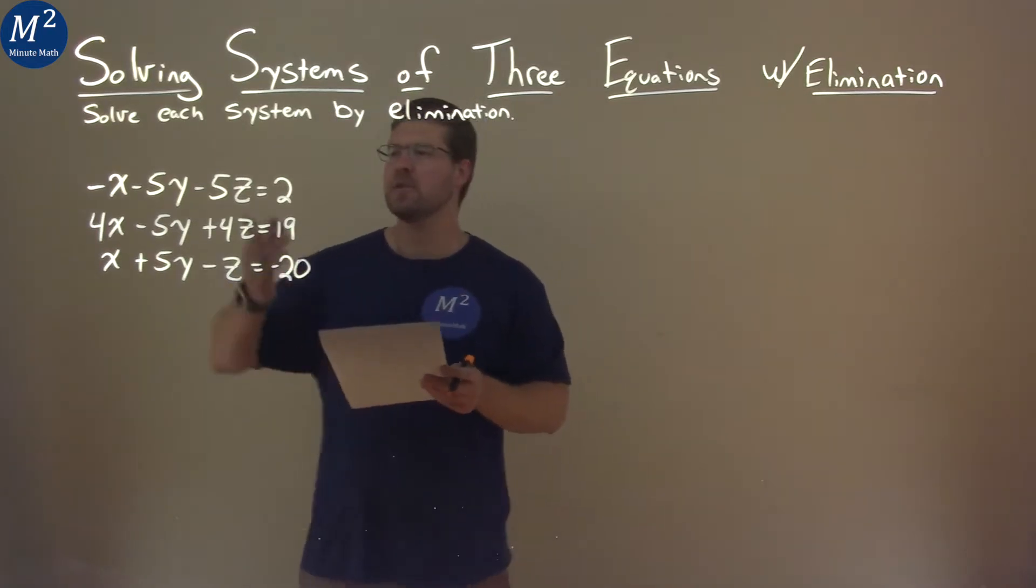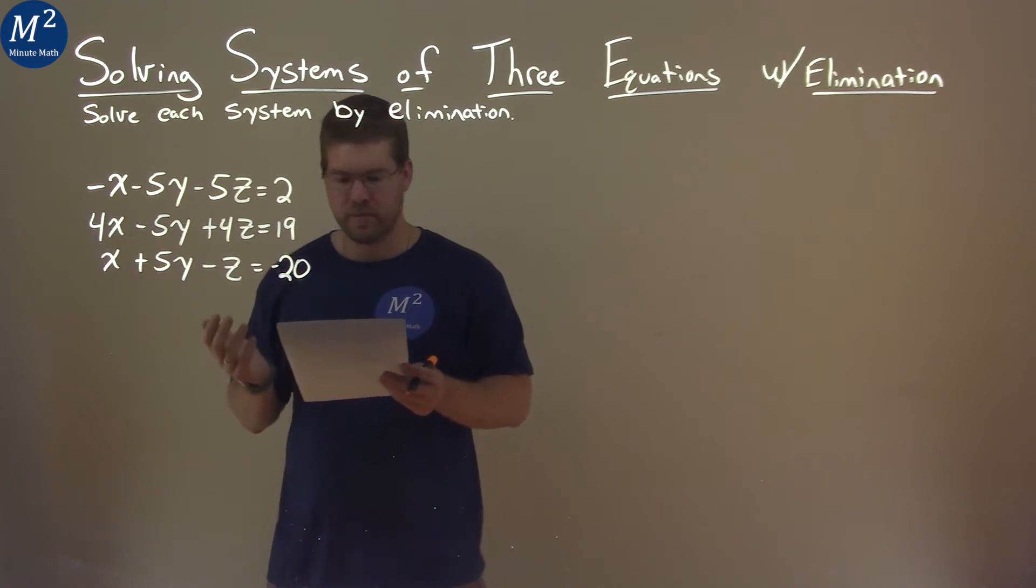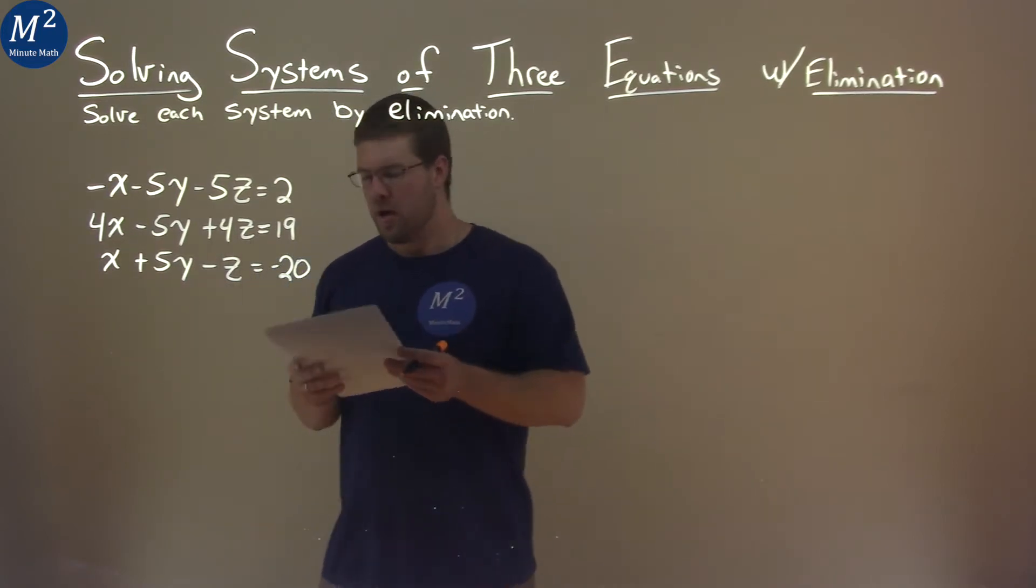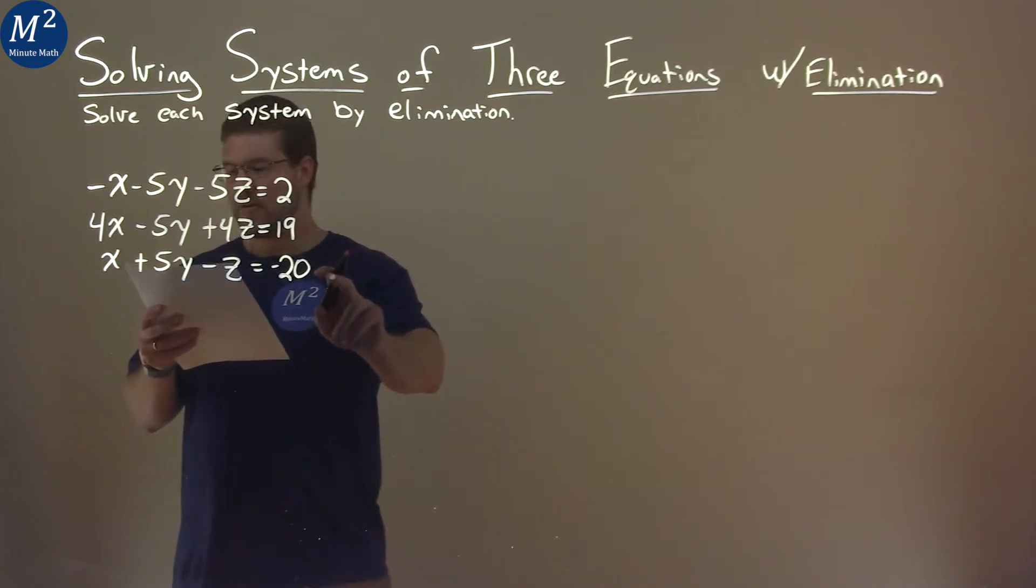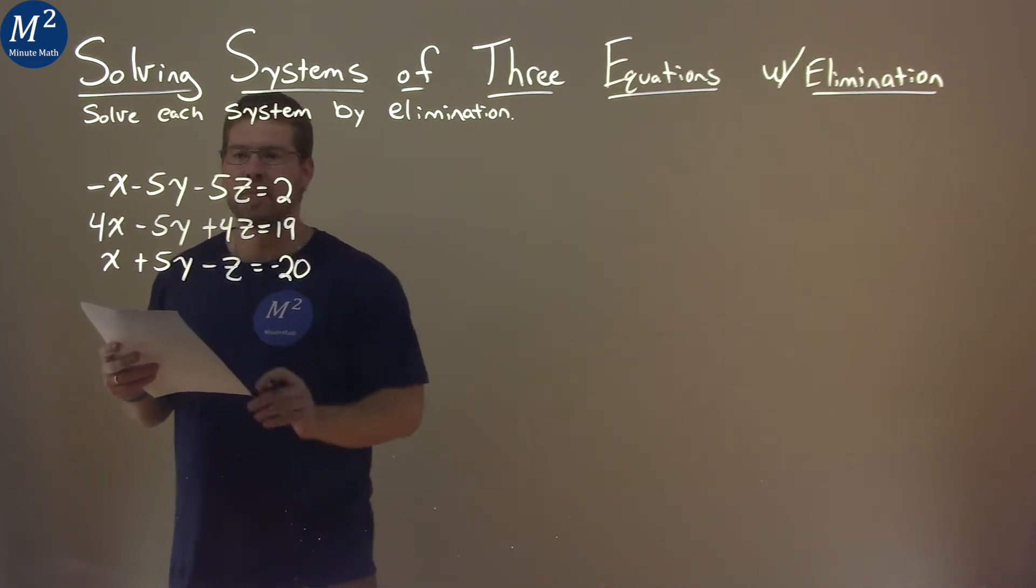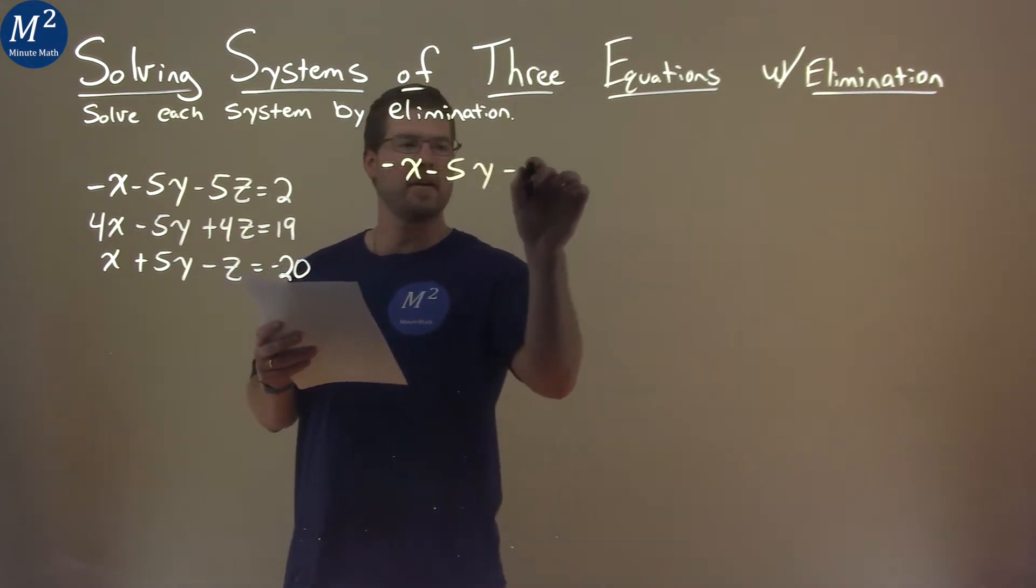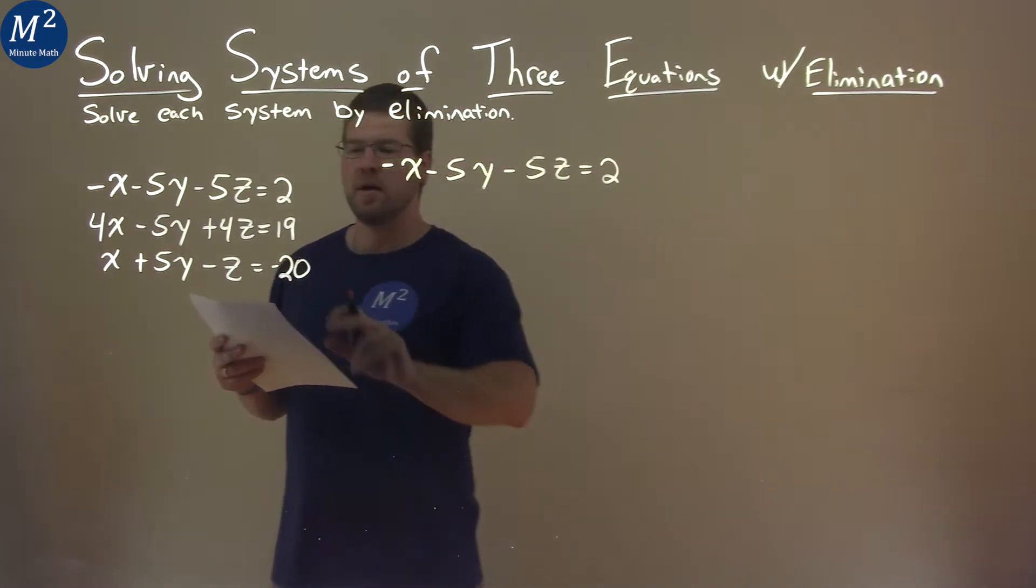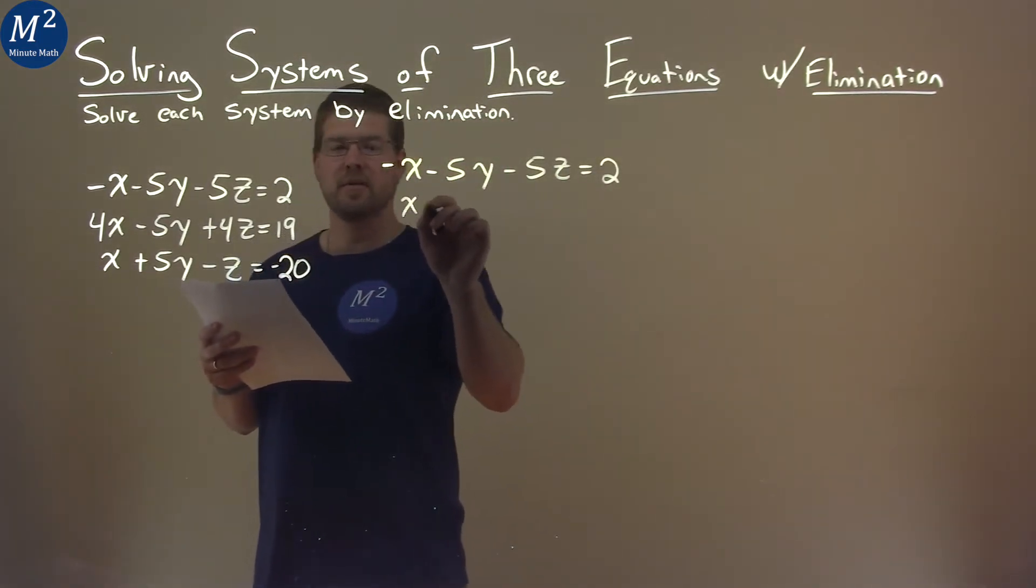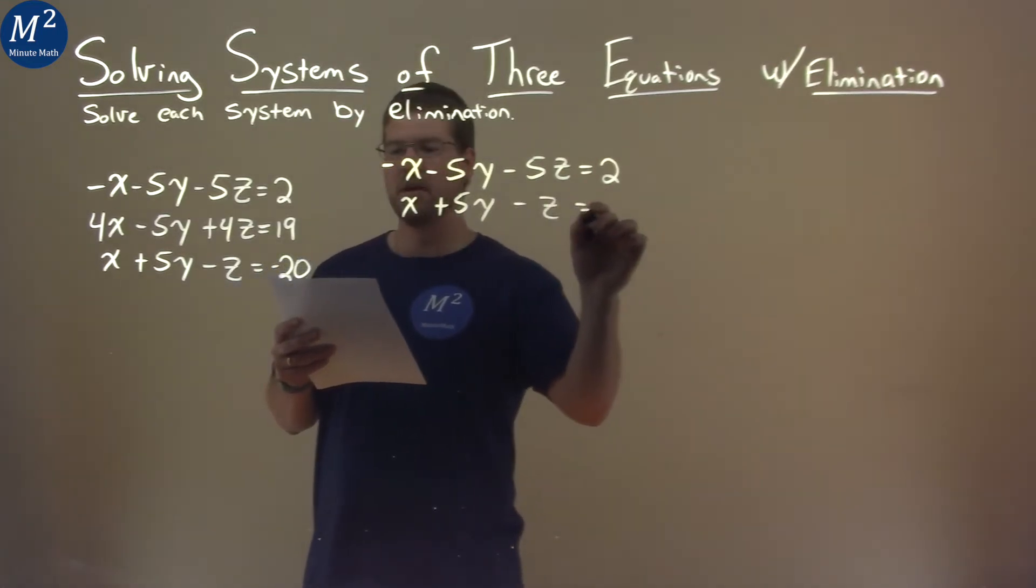First thing I'm looking for, I'm trying to find two equations easily that I can just add and eliminate a variable, and hopefully two variables. So what I see here is the first equation and the last equation, I can add them together. So I'm going to put that over here, negative x minus 5y minus 5z, and it's important to take your time here, equals 2. The second equation, we have x plus 5y minus z equals negative 20.